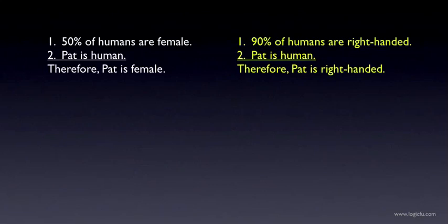Now take a look at this argument. 90% of humans are right-handed. Pat is human, therefore Pat is right-handed. This argument is different. In this case, the premises make it very likely — 90% likely — that the conclusion is true. They don't guarantee that Pat is right-handed, but we might still want to say that they provide good reasons to think that Pat is right-handed. And if that's the case, then we should say that this argument satisfies the logic condition, because it has the property that if all the premises are true, then they give us good reason to believe the conclusion.